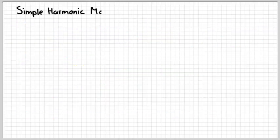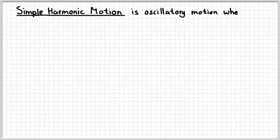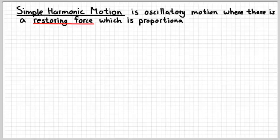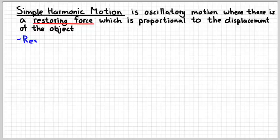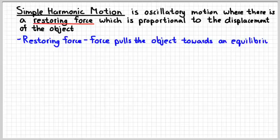So what is simple harmonic motion, then? Simple harmonic motion is when something is oscillating, but there is a restoring force which is proportional to the displacement of the object. Meaning the farther away it gets from some equilibrium point, the bigger that force gets. So restoring force means that it's pulling the object back to some equilibrium position.